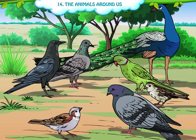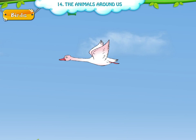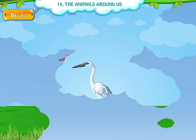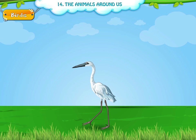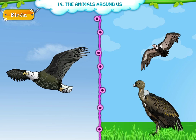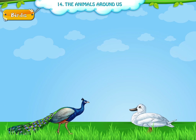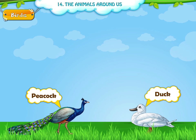Second, the birds. Birds are the winged creatures. They have two wings with which they can fly. Birds also have two legs and a beak. Some birds fly very high like the eagle and the vulture, while some others only hop on the ground like the peacock and the duck.